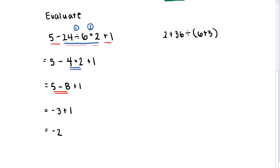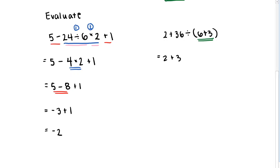In this next example, we have some parentheses involved, so we should evaluate those first. Even though this is addition inside the parentheses, and we know that typically addition goes after multiplication and division, these parentheses tell us to perform this addition first. So we get 2 plus 36 divided by whatever we get from the parentheses — that's 9. Then we perform 36 divided by 9, which gives us 4, and 2 plus 4 is 6.